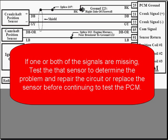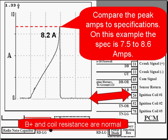If one or both of these signals are missing, test the sensor. Look at the circuits. You need to determine the problem and make the repair to the circuit or replace the sensor before continuing on with testing this PCM.